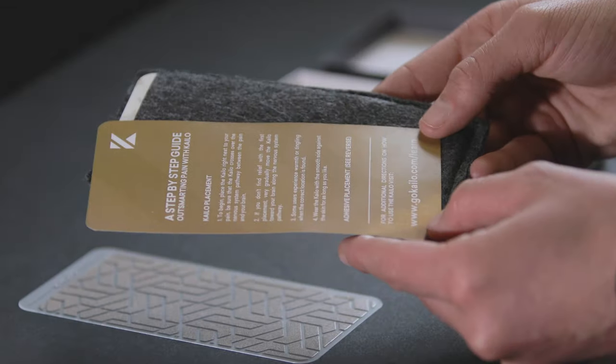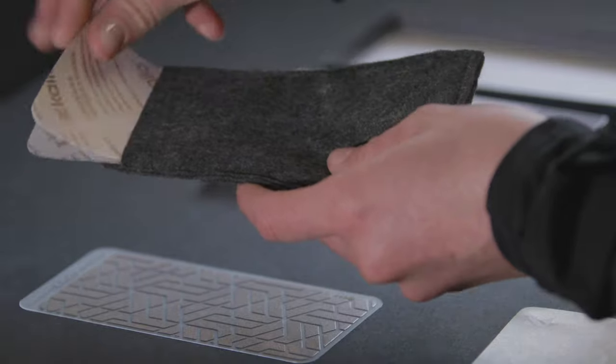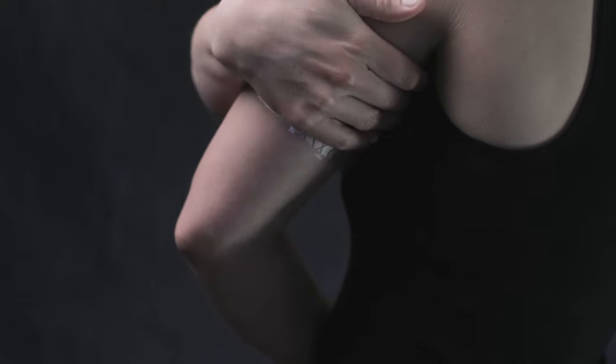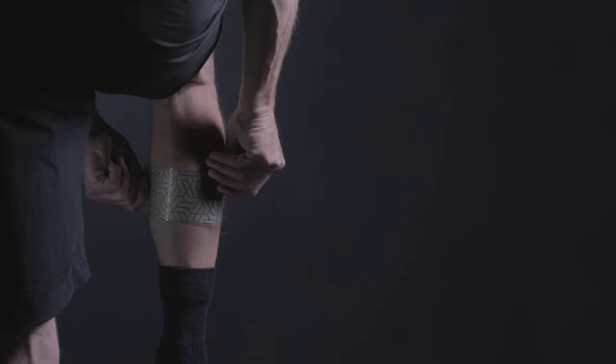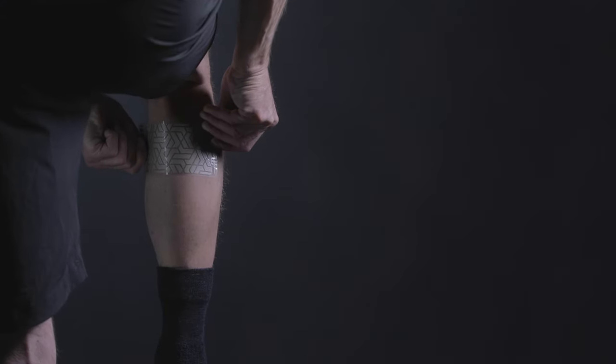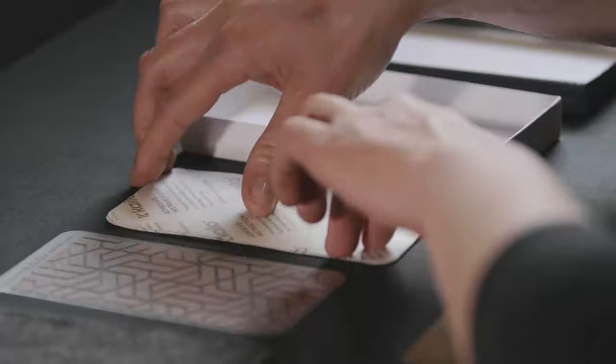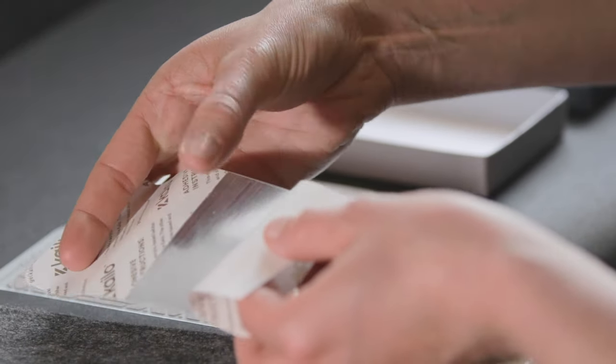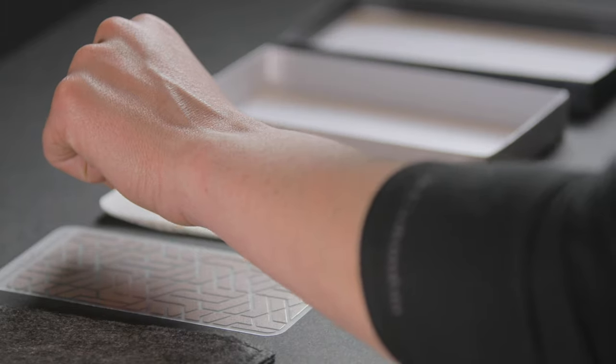With Kylo, placement is everything. That's why we created a silicon adhesive that will allow you to place your Kylo exactly where you need it. Once you have found the ideal location to block your pain with the Kylo patch, you'll want to attach an adhesive. Our silicon adhesives are soft on the skin, don't pull out the hair, and will restick multiple times.